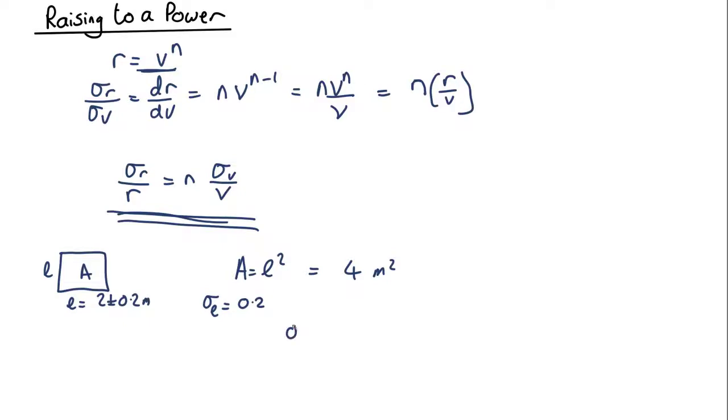We can now use this equation up here. The uncertainty in the length, so that's sigma l over l times n, n here is 2, because you're raising things to the second power, equals the uncertainty in the area over the area.